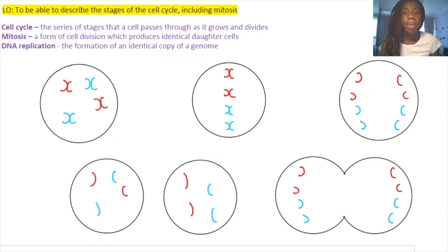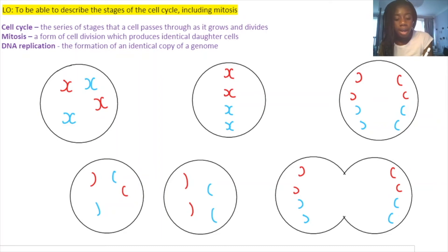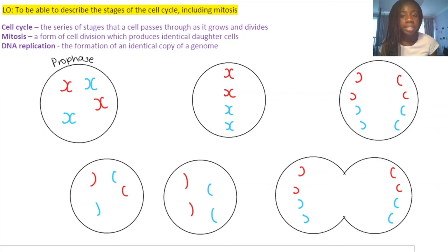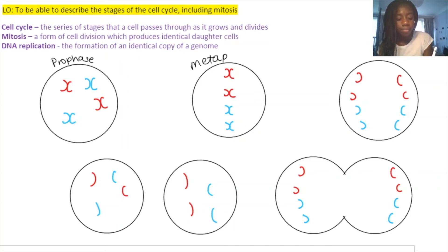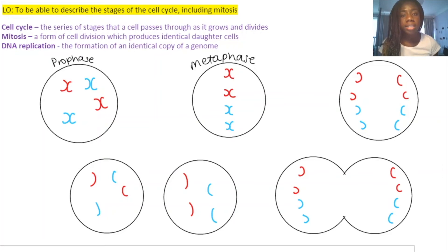There are four main phases of mitosis. The first is prophase, where chromosomes condense and become more visible, and the nuclear membrane breaks down and disappears. The second phase is metaphase, where all chromosomes line up along the central equator, ready to be pulled to either side of the cell.